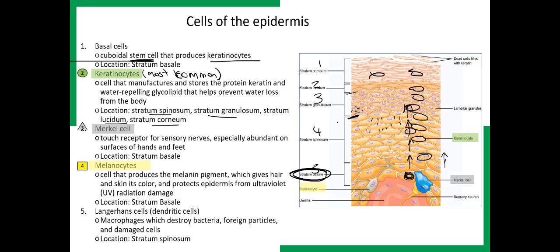The third type of cells are the Merkel cells. Merkel cells are involved in sensation — they're involved with touch receptors for sensory nerves. They're especially abundant in the hands and feet, which is why our hands are very sensitive to touch. That's why we can read braille, and why we can sense objects as we touch them with our hands and fingers.